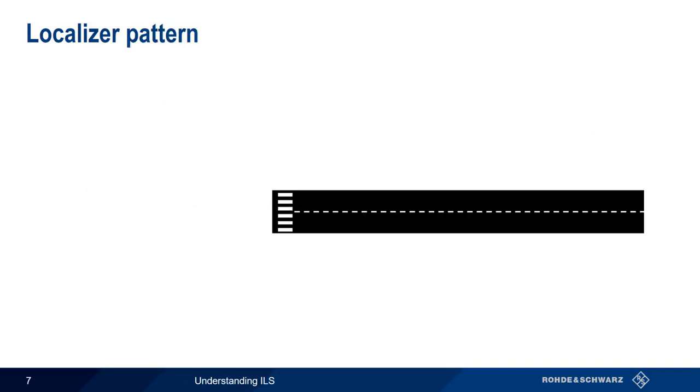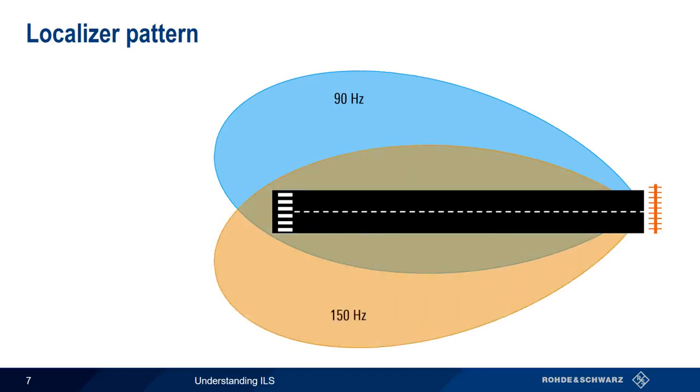Let's look at a diagram. Here, the localizer antenna array located at the far end of the runway produces a pattern consisting of two lobes. The one on the left side of the runway is modulated at 90 Hz, and the one on the right side is modulated at 150 Hz. These lobes will have approximately equal amplitude along the centerline of the runway, allowing the pilot to use the localizer for horizontal guidance during approach and landing.